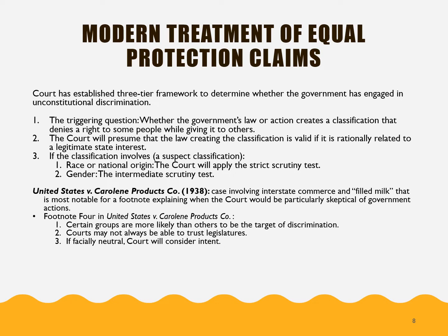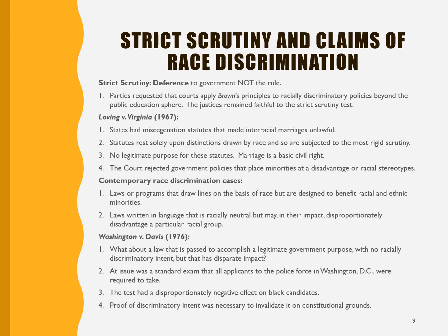Race and gender and national origin and religion are these types of classifications that we are very skeptical of, and the court has been very skeptical of. Following Brown versus Board of Education, parties began to request the court apply Brown's principles regarding segregation to areas beyond the public education sphere. The justices continue to uphold the strict scrutiny test — this idea of requiring a compelling government interest — in Loving versus Virginia. They struck down miscegenation laws, which banned interracial marriages and interracial relationships, saying there was no legitimate purpose because marriage is a basic civil right.